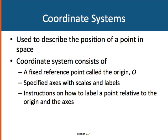A coordinate system consists of a fixed reference point, which we call the origin, usually labeled with an O. It has specified axes that have scales and labels and instructions on how to label a point relative to that origin and the axes.